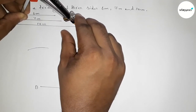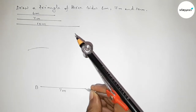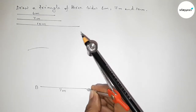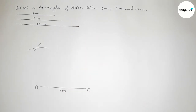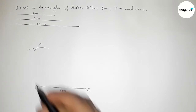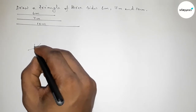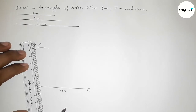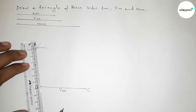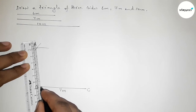Next, taking the length 10 centimeter by using compass, and putting the compass on point C and drawing an arc which meets the previous arc at a point. So taking that intersection as point A.